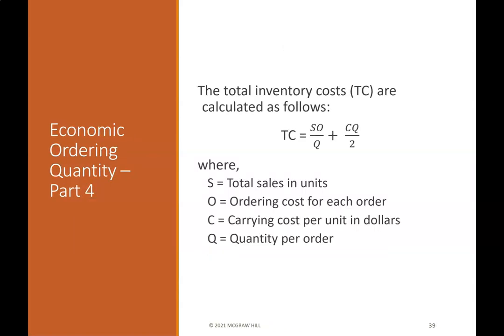The total inventory costs are calculated as: (S/Q × O) + (CQ/2), where S equals total sales in units, O equals ordering costs for each order, C equals carrying costs per unit in dollars, and Q equals quantity per order.